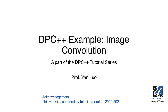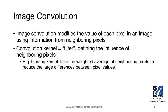Today I'm going to talk about another DPC++ example: image convolution. This is part of the DPC++ tutorial series. Image convolution is to modify the values of each pixel in the image using information from neighboring pixels. We use convolution kernels, or often called filters, to define the influence of neighboring pixels. Using different filters, we can generate different effects on the original image.